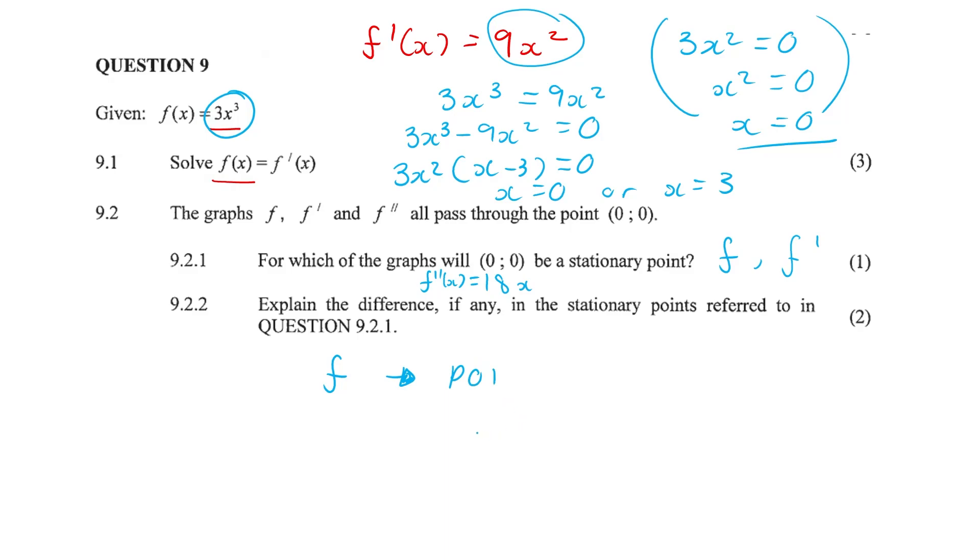So point of inflection POI, person of interest, and with our first derivative we get 9x². That's not a cubic function that is going to be a quadratic function. In other words a parabola. So it is going to be a turning point, a TP. That's it for the video.